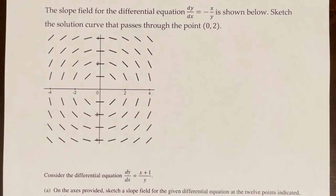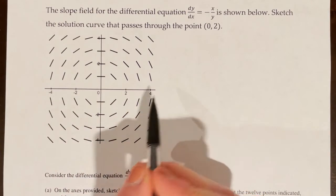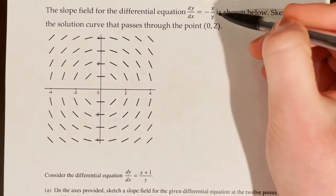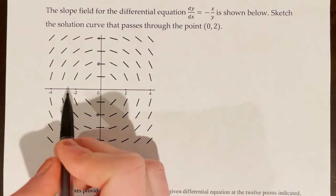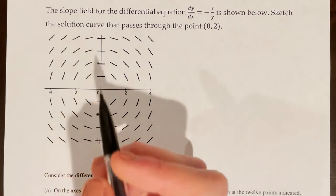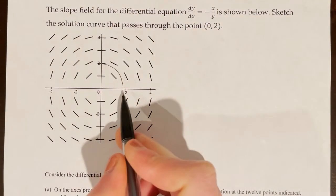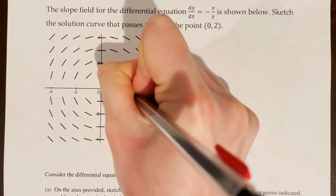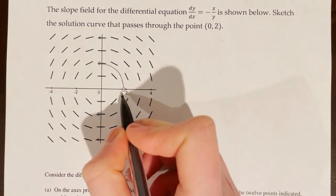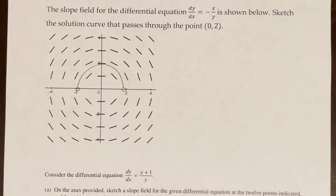The slope field for dy/dx = -x/y is shown. Sketch the solution curve through (0, 2). We must be careful: along the x-axis, y = 0, which means we're dividing by 0, so dy/dx is undefined there. If we hit that undefined point, we must stop and draw an open circle, since the solution curve must be a continuous curve on an open interval. Starting at (0, 2), we follow the tangent lines, stopping with open circles as we approach the x-axis on both sides.